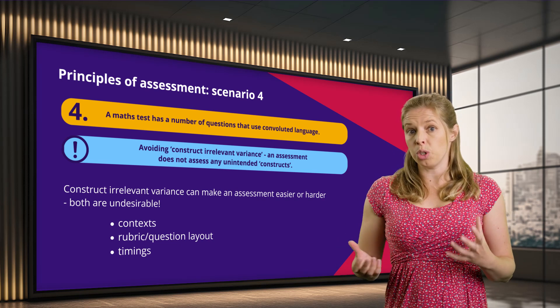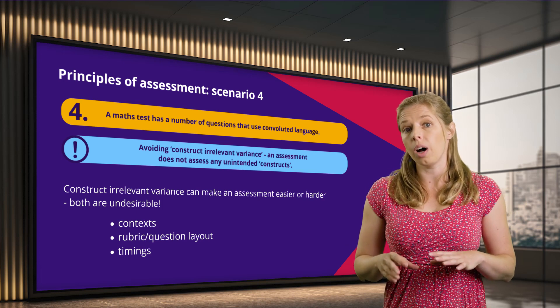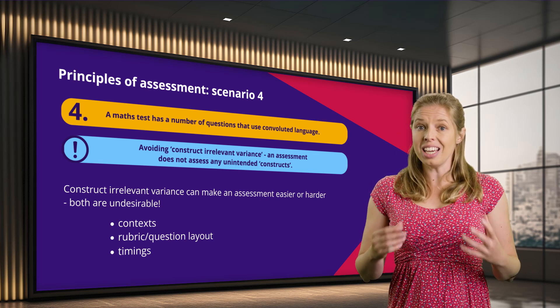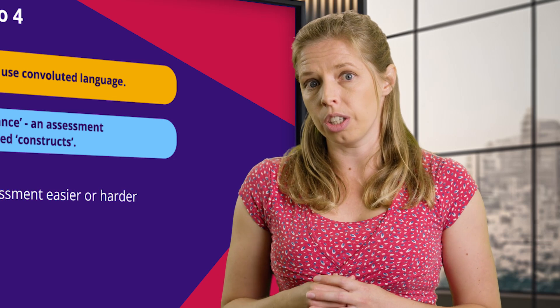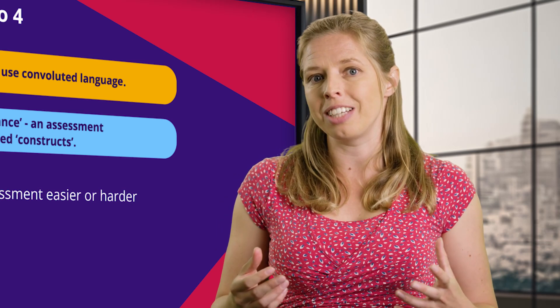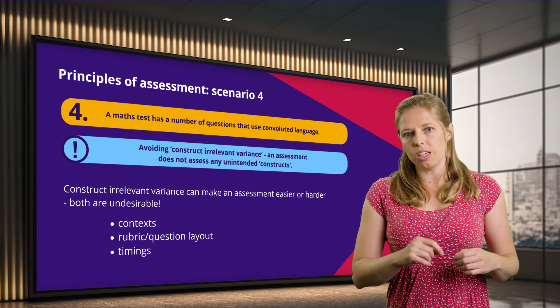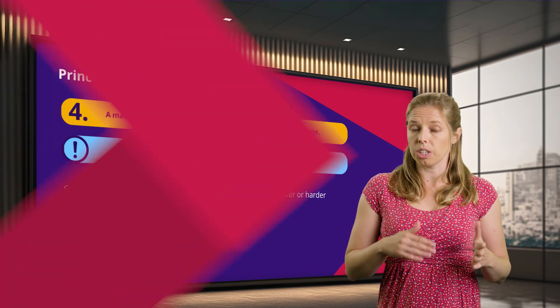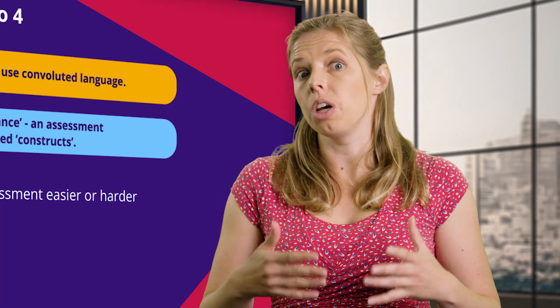Construct irrelevant variance can come in two forms. The scenario just described is construct irrelevant difficulty — something in the question is getting in the way of students showing what they know, understand and can do. You can also have construct irrelevant easiness, where something in a question gives the answer away — for example, a multiple choice question with a grammatical clue where only one answer works grammatically, allowing students to get the answer without knowing the underlying construct. We are always mindful of both when writing questions and mark schemes.